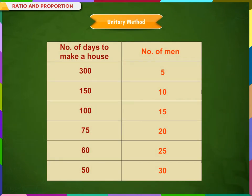Let us see another situation. The table below shows the number of days to make a house, which is indirectly proportional to the number of men. We observe that fewer men take more days to make the house, whereas more men take fewer days. So here also, one quantity increases and the other decreases — this is inverse variation.